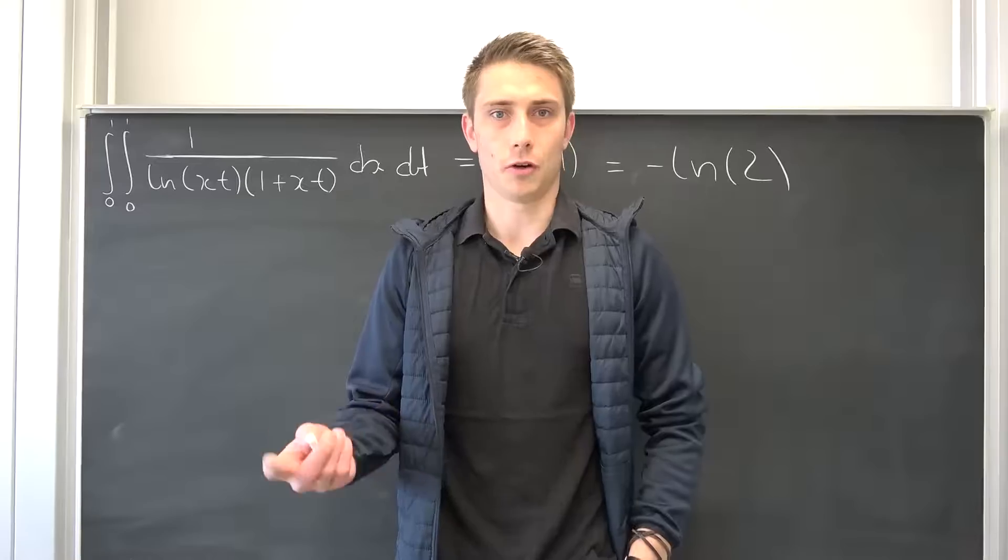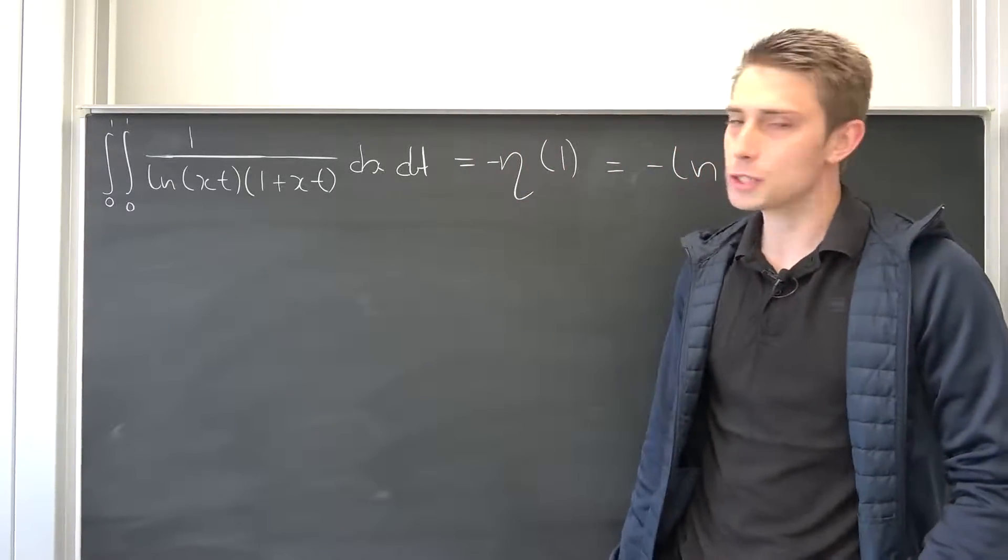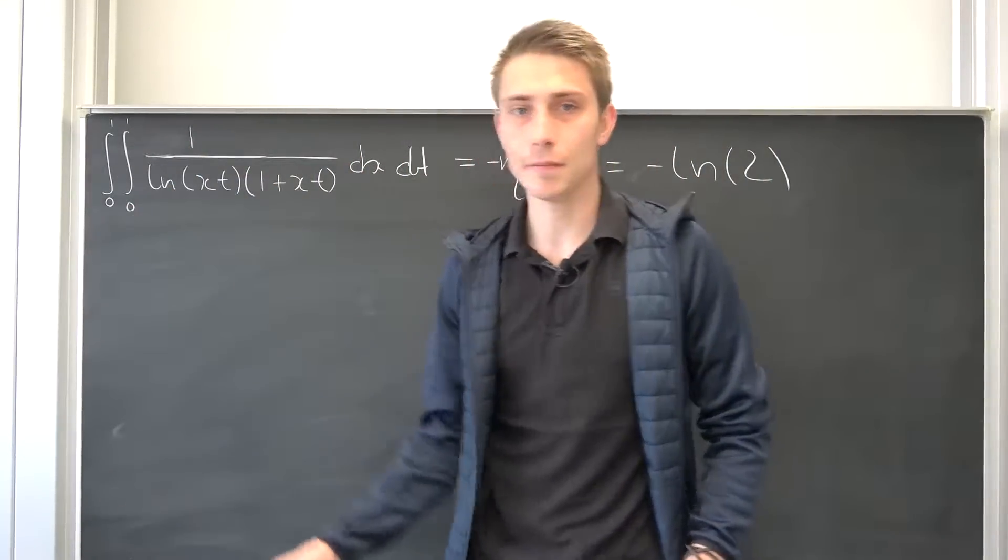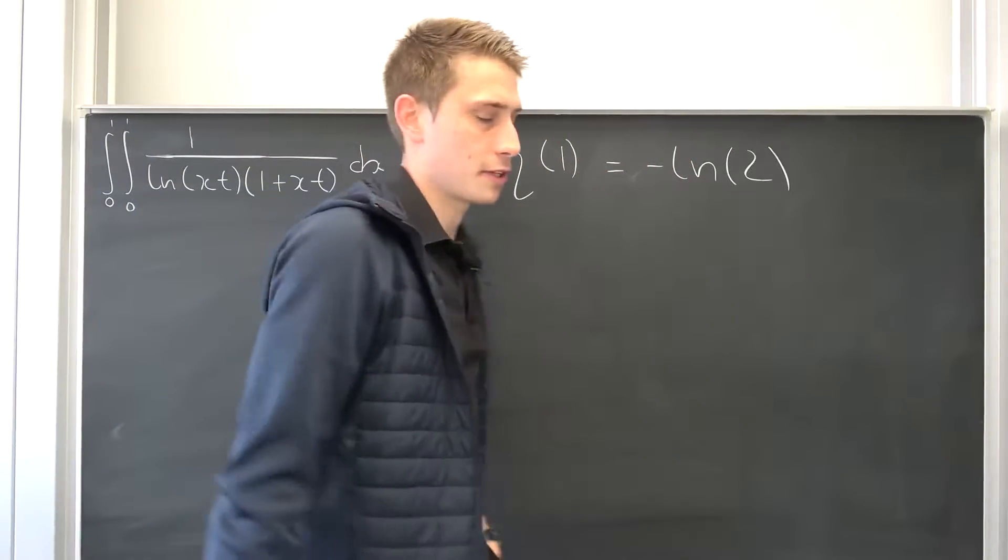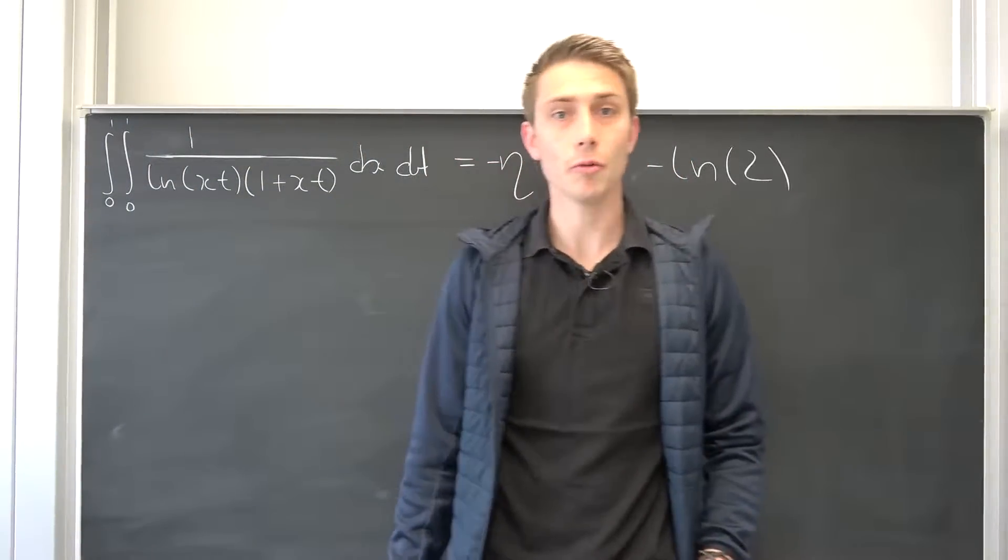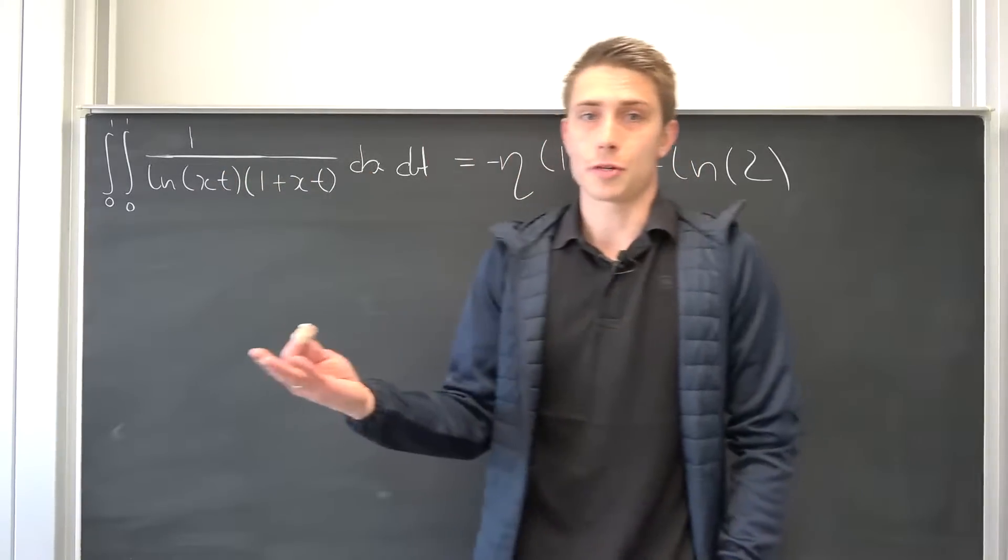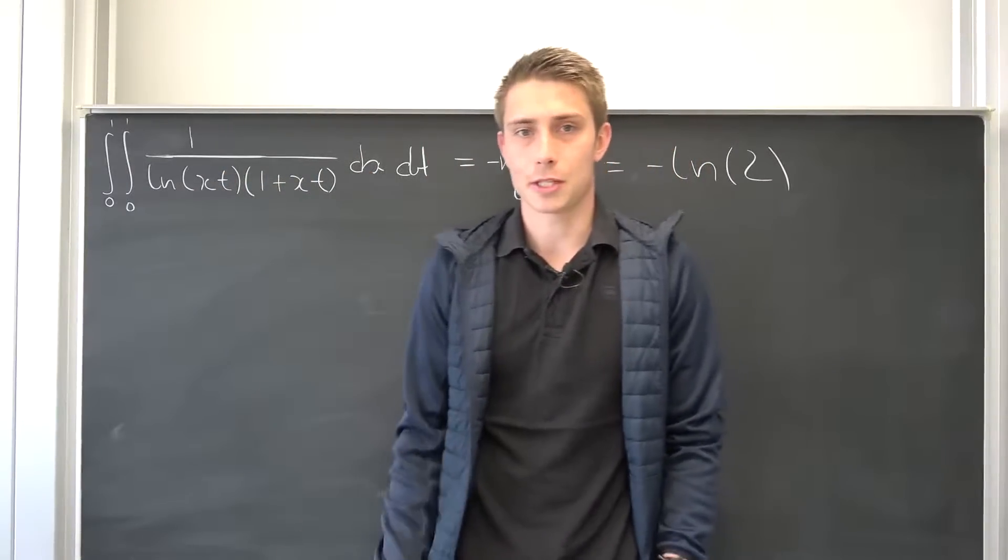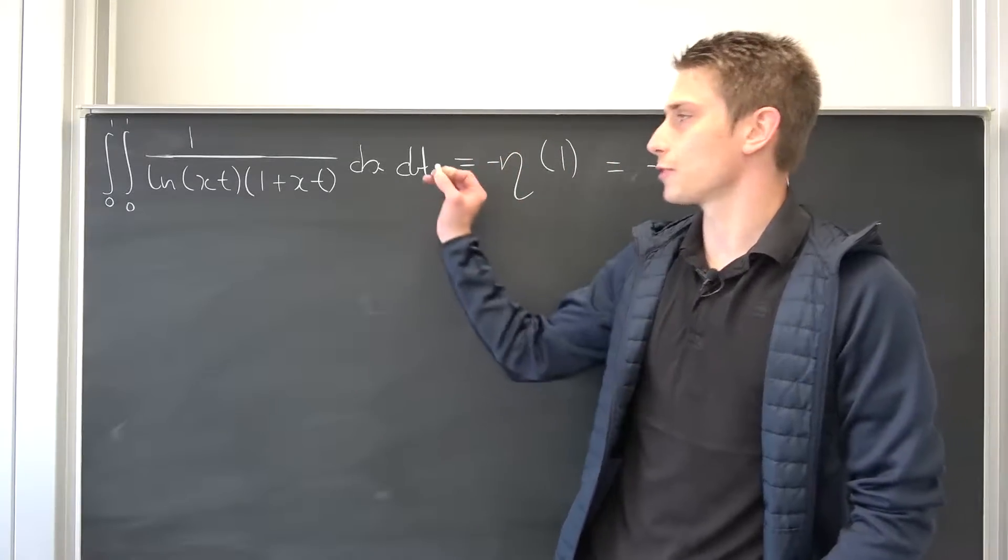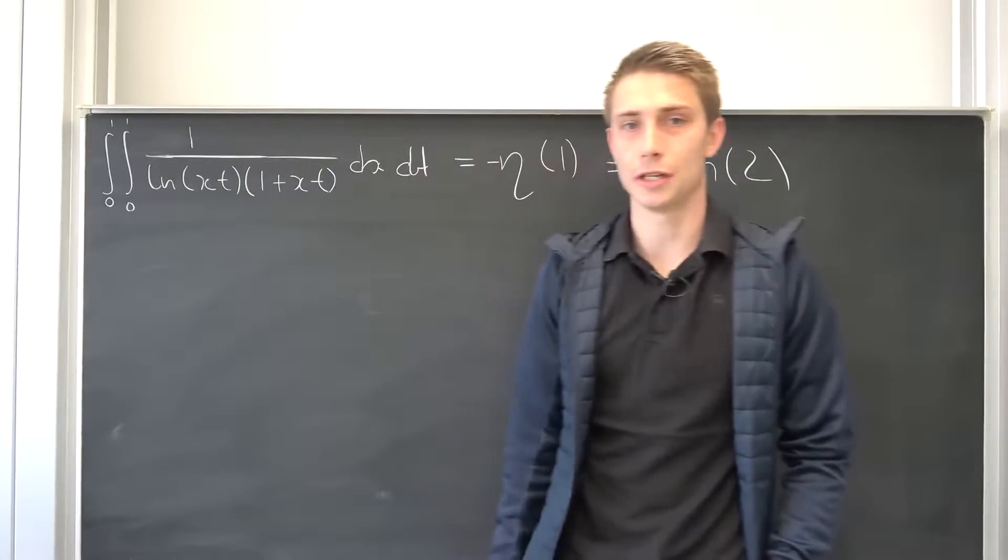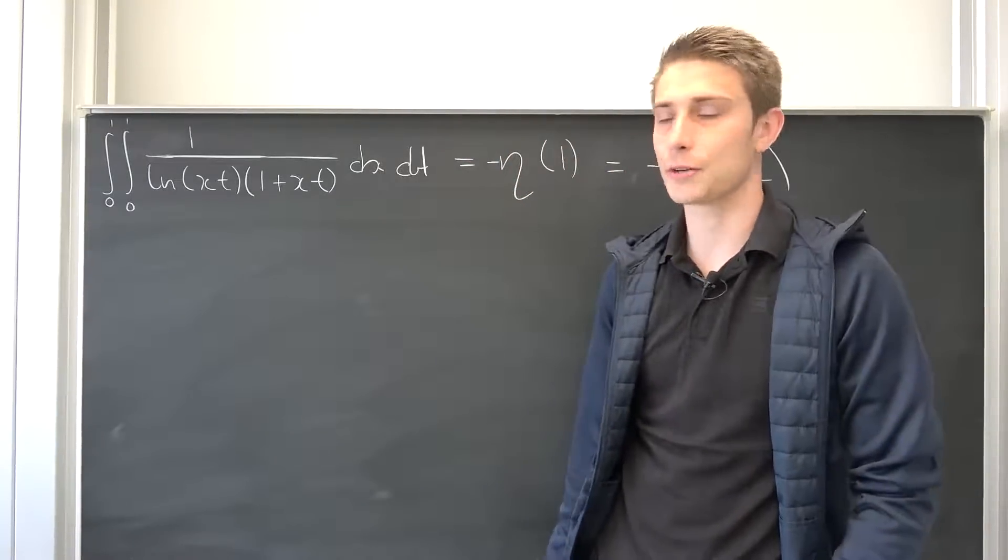In one video that I already filmed and posted, we actually noticed that this double integral right here is nothing but negative eta of 1, which is nothing but negative the natural log of 2. We have shown that this thing actually converges to a nice value which was an infinite series. That was a pretty nice proof back then, but now we are going to solve this thing directly right here using some easy spielereien, so it's going to be quite easy.